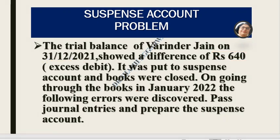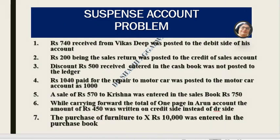The errors found are: (1) Rs. 740 slip from Vikas Thib was posted to the debit side of his account. (2) Rs. 200 being the sale return was posted to the credit of the sale account. (3) Rs. 500 discount received, entered in the cash book, was not posted to the ledger. (4) Rs. 1,040 paid for repair to the motor car was posted to the motor car account as Rs. 1,000. (5) A sale of Rs. 570 to Krishna was entered in the sale book as Rs. 750. (6) While carrying forward the total of page 1 in an account, Rs. 450 was written on the credit side instead of the debit side. (7) Purchase of furniture from X for Rs. 10,000 was entered in the purchase book.